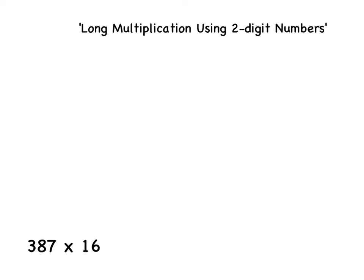This video will show you how to use long multiplication when using two-digit numbers. On the screen you can see an example of a multiplication using a two-digit number: 387 multiplied by 16.